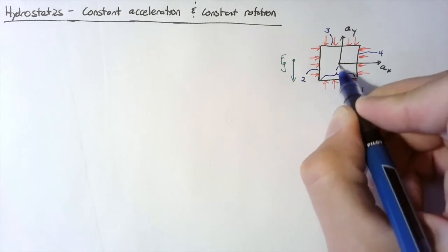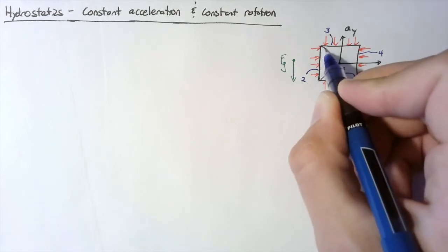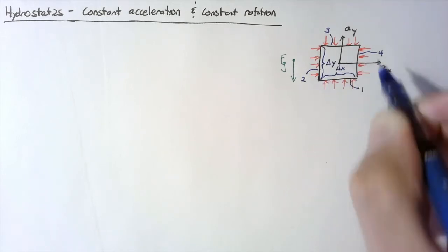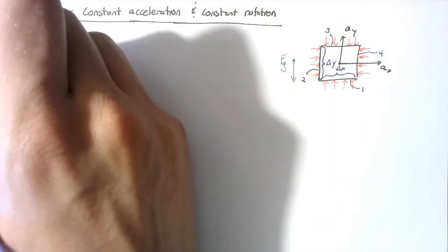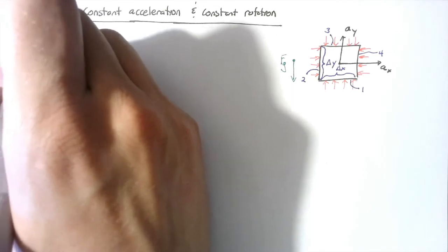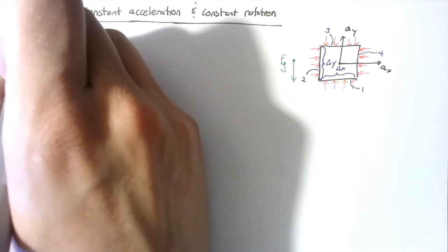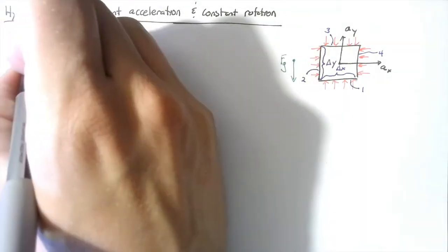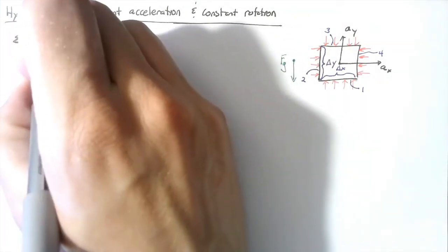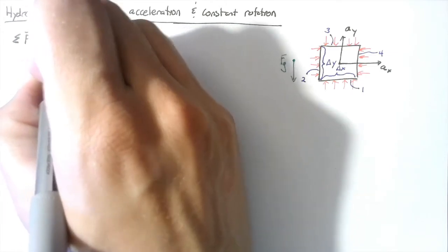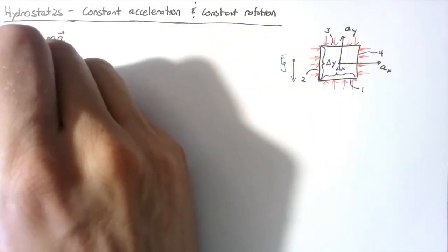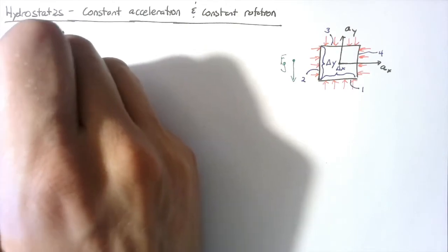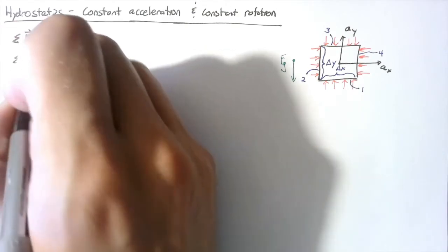The width is going to be delta x, the height delta y, and the depth is going to be delta z into the page. Just as with the original pressure variation video, we're going to be looking at the sum of the forces. But this time, instead of these being zero, they have to be equal to mass times acceleration. We'll split this into the sum of the forces in the x and the sum of the forces in the y.